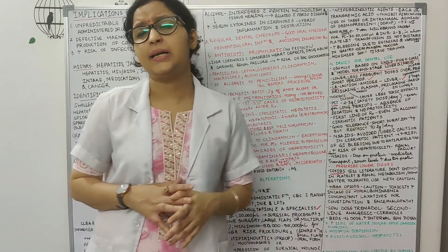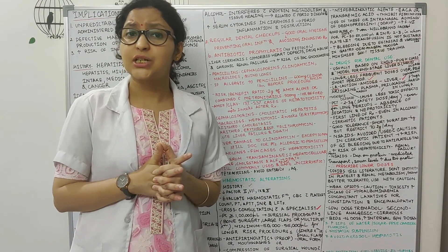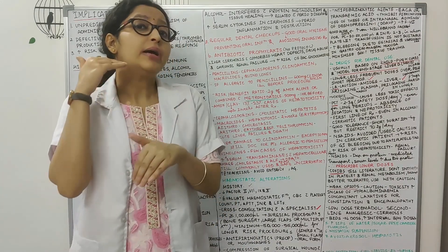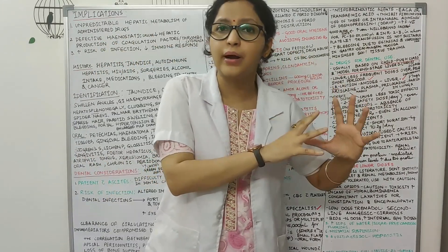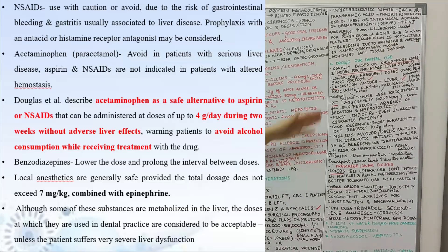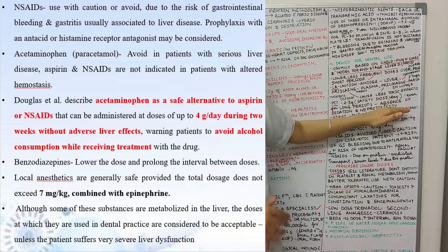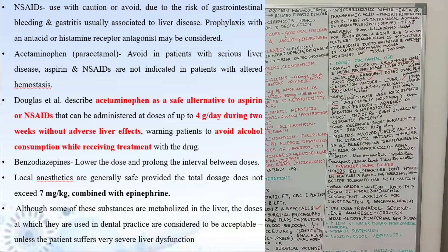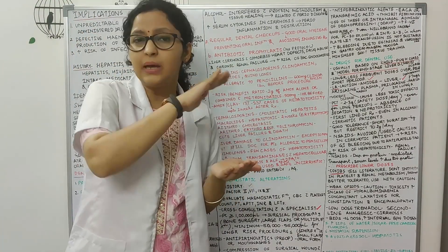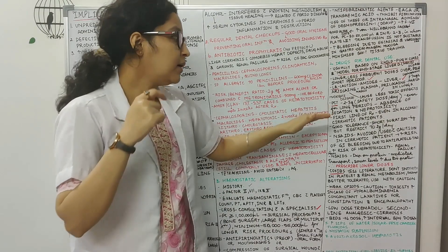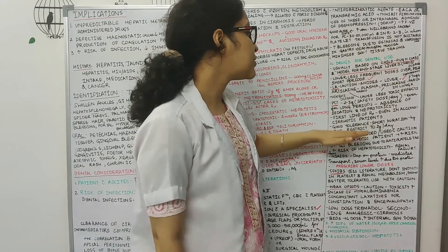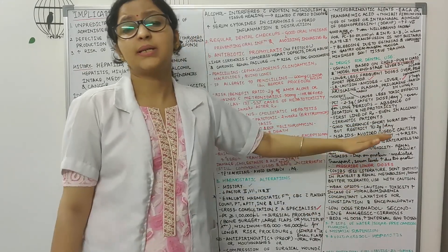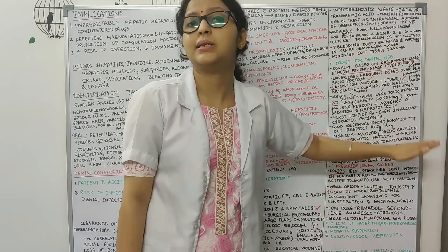All NSAIDs are contraindicated because of their anti-platelet action and because there is increased risk of gastrointestinal bleeding. If we need to give an analgesic, paracetamol is the first drug — 2-3 grams per day is the safety dose, and you can increase up to 4 grams, but it is usually safe to keep the maximum limit to 2 grams per day. Even in alcoholic cirrhotic patients, it shows good tolerance up to 2 grams per day. There is also increased risk of hepatotoxicity with NSAIDs.